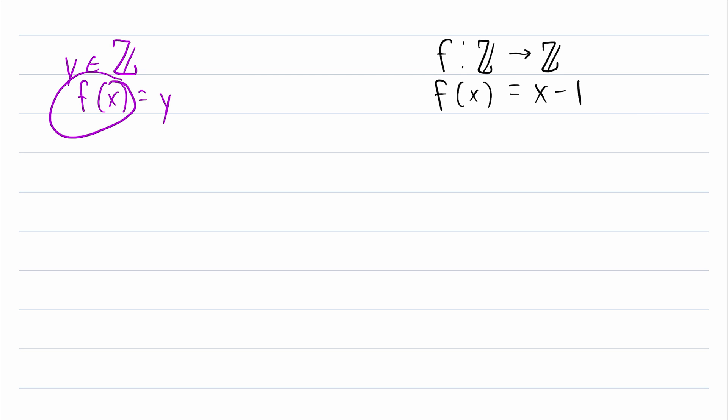For starters, we can do some substitution, substitute x minus 1 in place for f of x. So x minus 1 is equal to y. Then we're trying to solve for x, add 1 to both sides, x equals y plus 1.